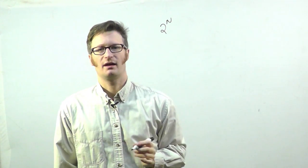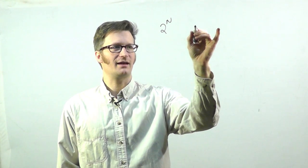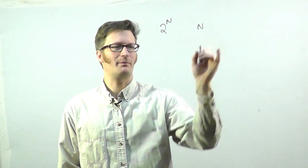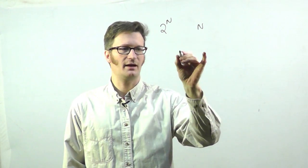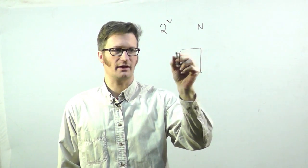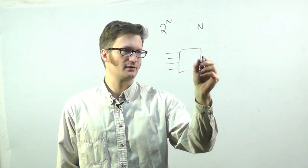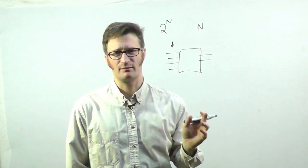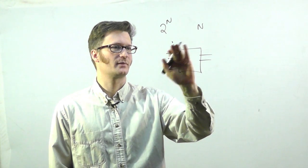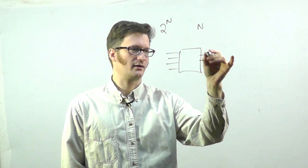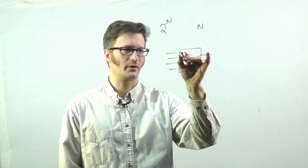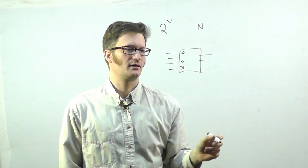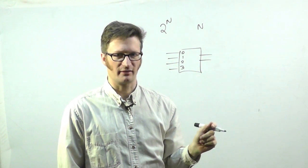An encoder is a device that has two-to-the-n inputs and outputs an n-bit binary number on the output. It'll be drawn with two-to-the-n inputs, only one of which can be high at any given time, and out of here will come a binary number representing which one was asserted as high.